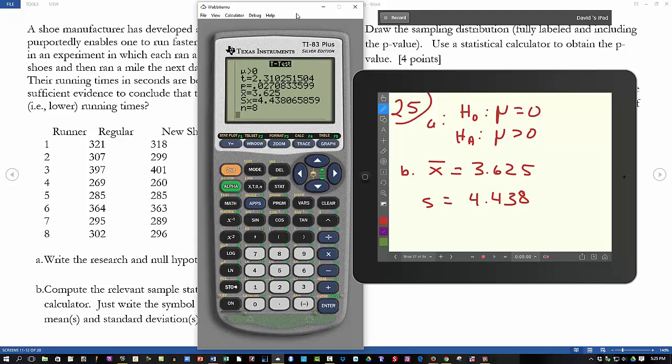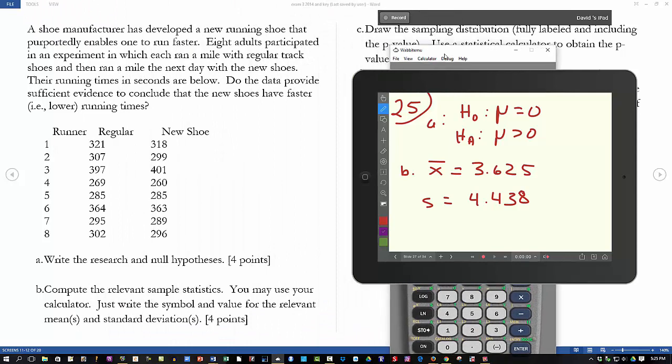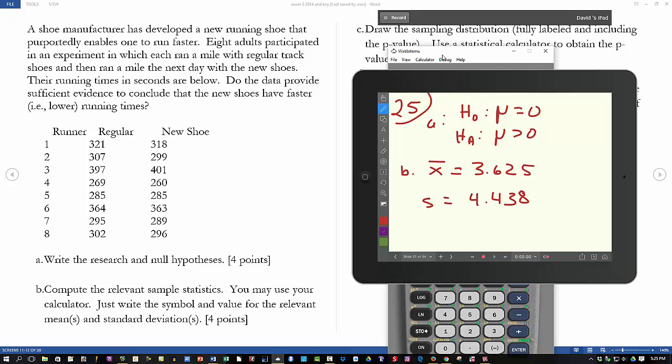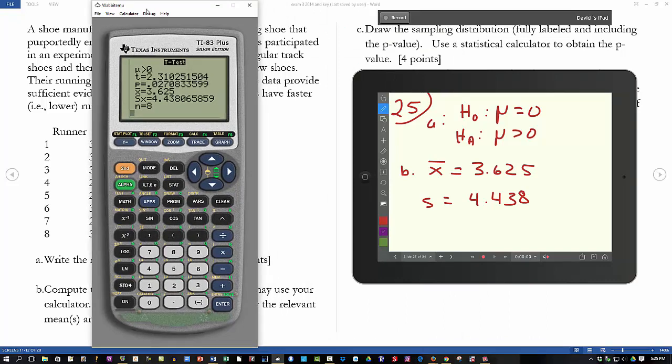That's what question B is asking for, is can we find the relevant sample statistics? And the relevant statistics are the sample mean, the sample standard deviation, and of course, the sample size is 8. And we have that as well.